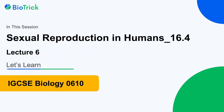Hello and welcome everyone to the next lecture of the IGCSE Biology 0610 series. In this lecture we will discuss topic 16.4 of the syllabus — sexual reproduction in humans. We will discuss the entire male reproductive system: the parts included, their functions, how sperms are produced, and the structure of the male gamete.